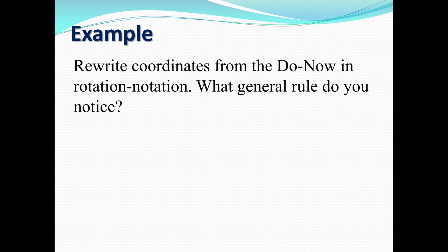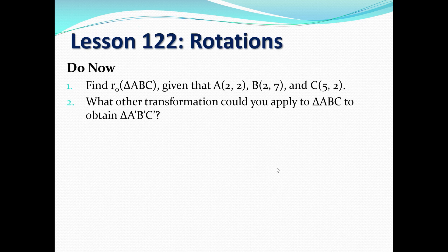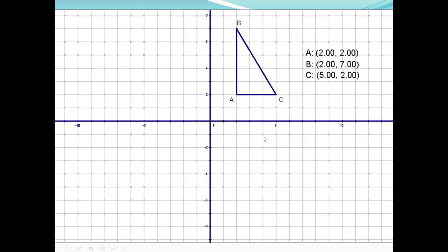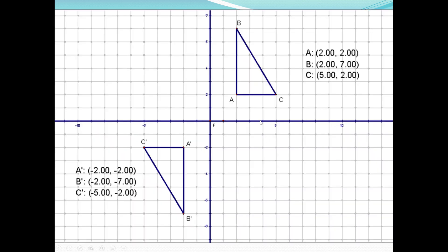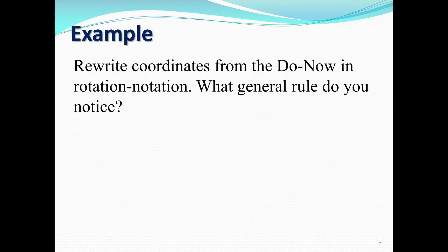It says here: rewrite the coordinates from the do-now in rotation notation and note what general rule you notice. Going back to the do-now, we have points A, B, and C. Let's rewrite each point in rotation notation. As you remember from the diagram, when we rotated we obtained those image points, so let's rewrite this and see if we can come up with a general formula.